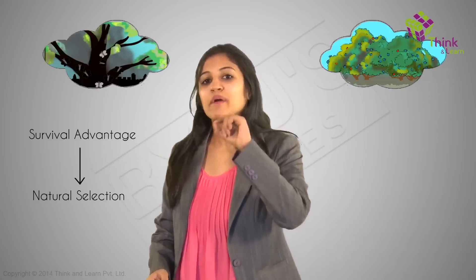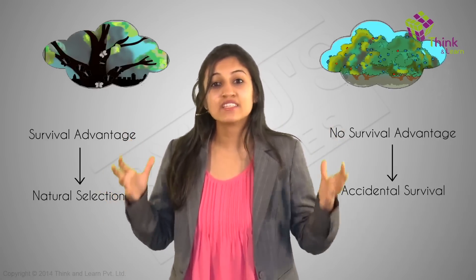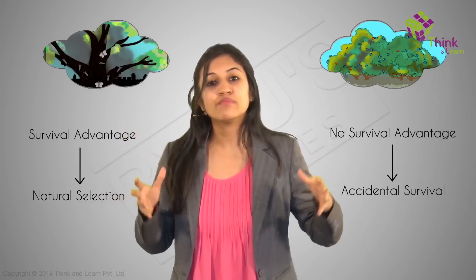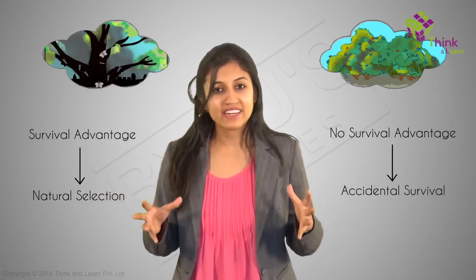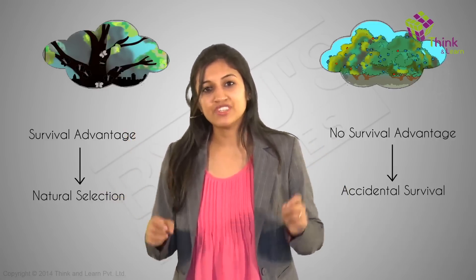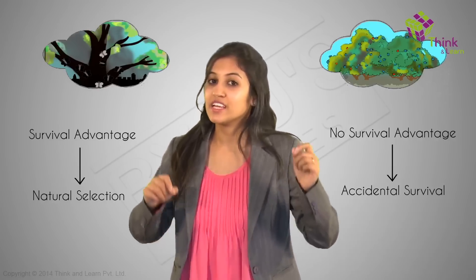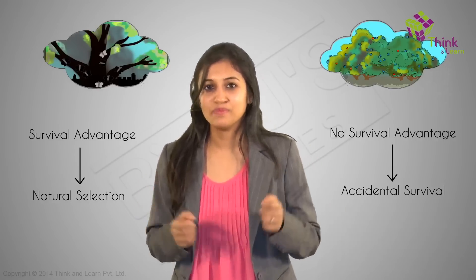If you observe the cases of the beetles and the peppered moths, you can see some basic differences. In the case of the peppered moths, the black moth became more common because of a survival advantage — natural selection was driving the production of more black moths. In the case of the beetles, there was no survival advantage; it was just an accidental survival of one type that changed the common characteristic of the beetle population. It is not necessary that those who survived were the better variety of the two.